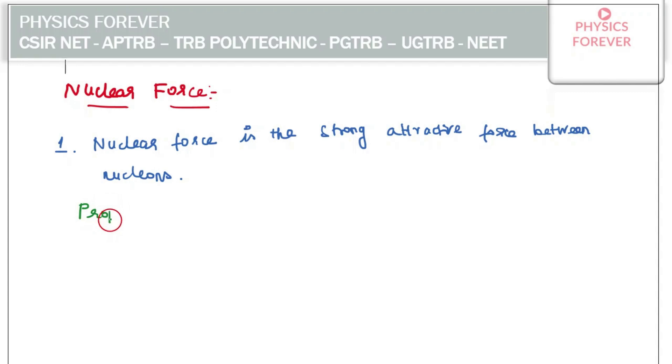Next, what are all the properties? Properties of nuclear force: First point, it is short range. The short range is 1 to 2 FM. This is the first point.